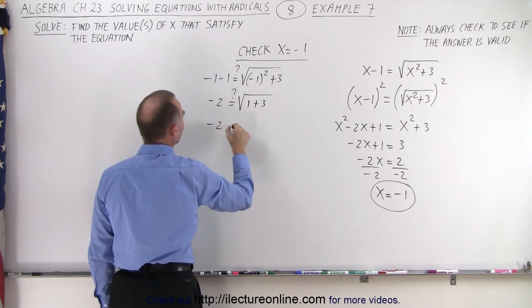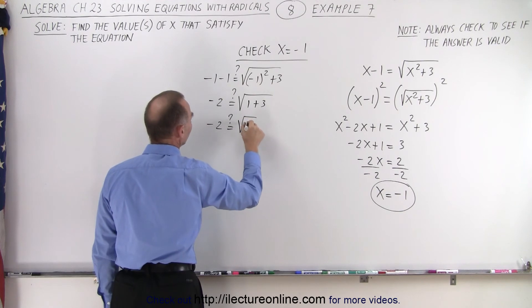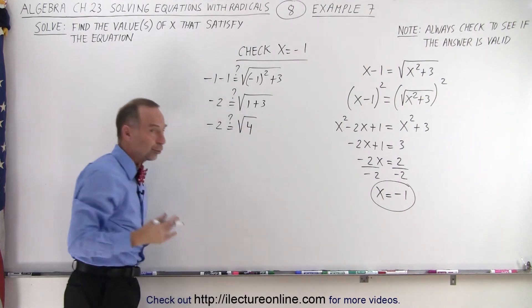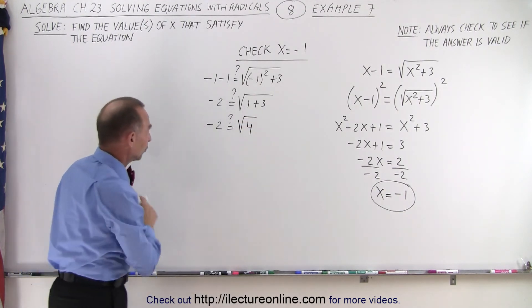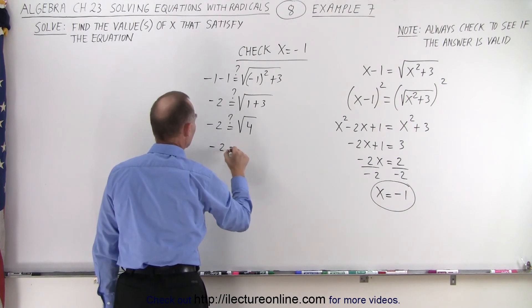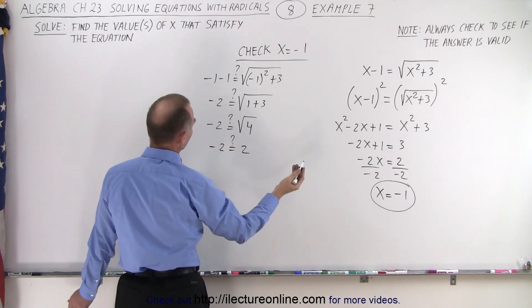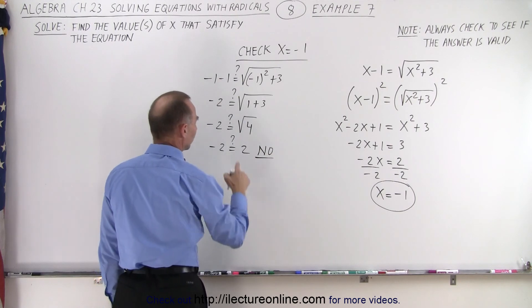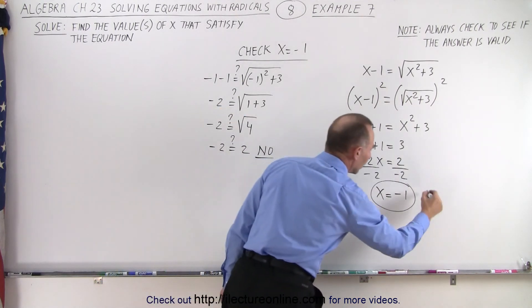So, we have negative 2 equals question mark the square root of 4. And by definition, the square root of 4 is indeed equal to 2. So, minus 2, question mark, is that equal to 2? And there's no way that those can be equal. So, since it's not equal, this is not a valid solution.